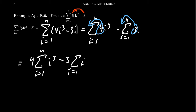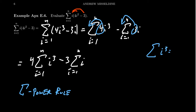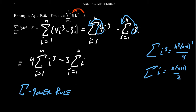At this point, just like applying the power rule for derivatives or antiderivatives, we apply the sigma power rule — what do you do with powers of i? We covered these formulas in the previous video, but as a reminder: the sum of i³ from 1 to n equals n²(n+1)²/4, and the sum of i from 1 to n equals n(n+1)/2. Applying those formulas here, we end up with 4 times n²(n+1)²/4 minus 3 times n(n+1)/2.